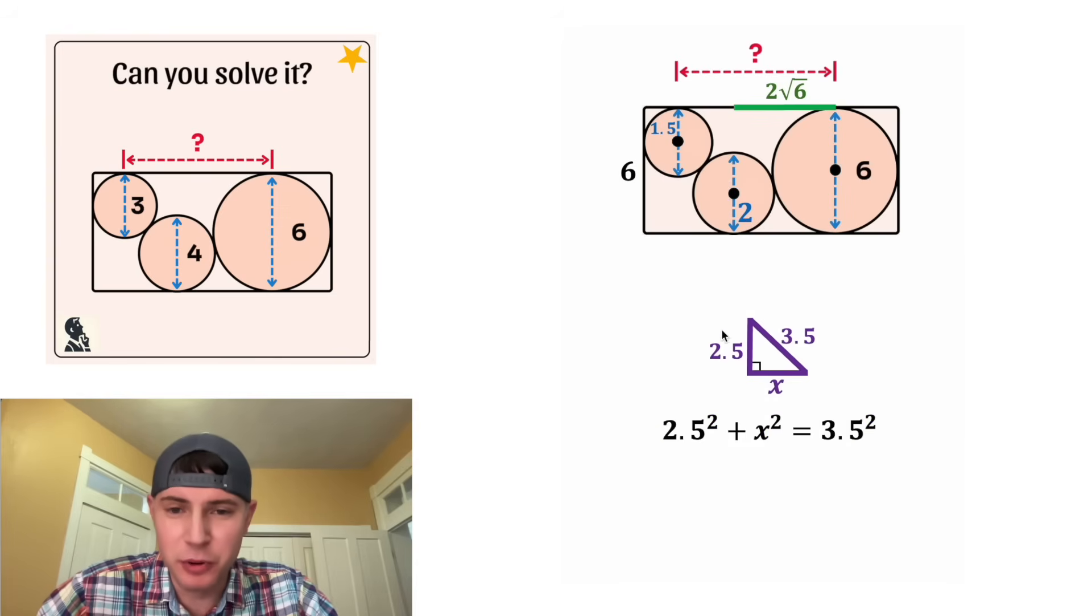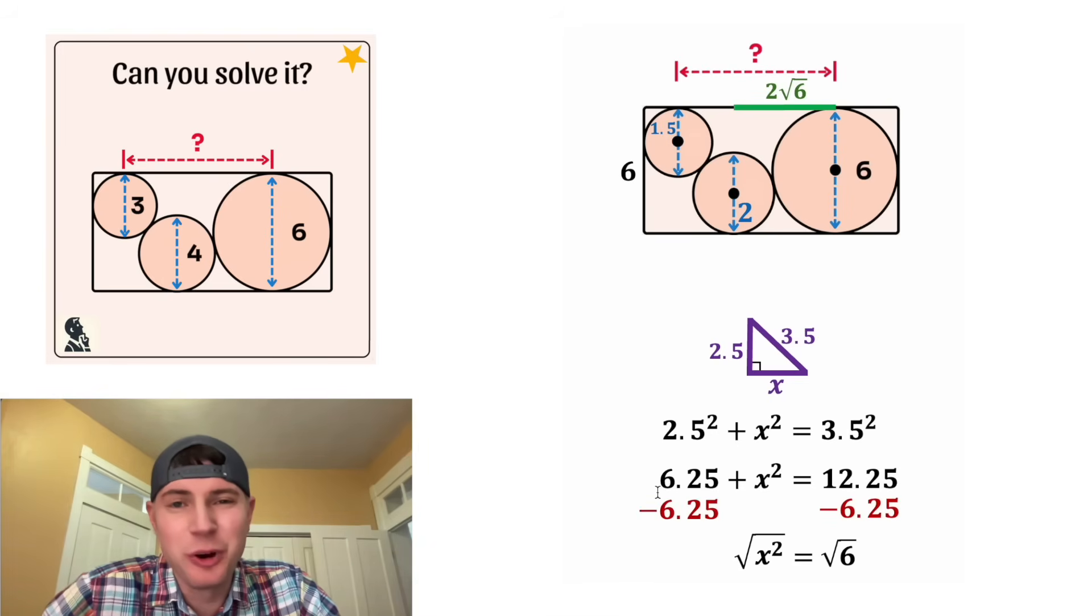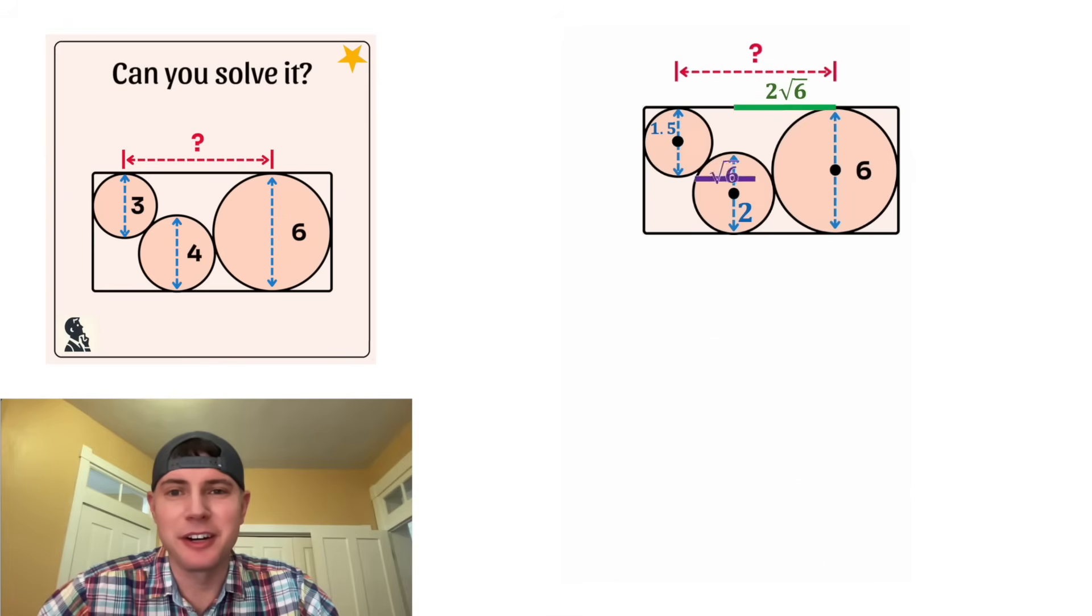The Pythagorean theorem tells us 2.5 squared plus X squared is equal to 3.5 squared. 2.5 squared is equal to 6.25 plus X squared. And then 3.5 squared is equal to 12.25. We can subtract 6.25 from both sides and we get X squared is equal to six. And after we square root both sides, we get X is equal to the square root of six. That means that our purple distance will be equal to the square root of six. And we can bring that back up here.